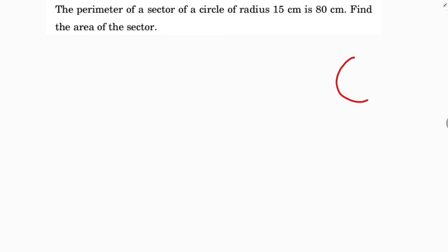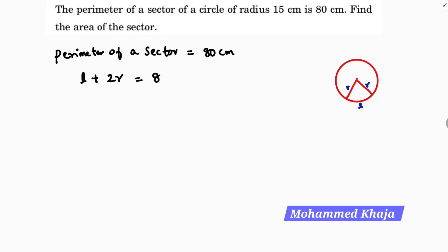Here the perimeter of a sector, so it's very clear, L plus 2R, this is radius, radius, and L. Perimeter is nothing but total boundary. So perimeter of a sector formula is length of an arc plus twice radius equals 80 centimeters.